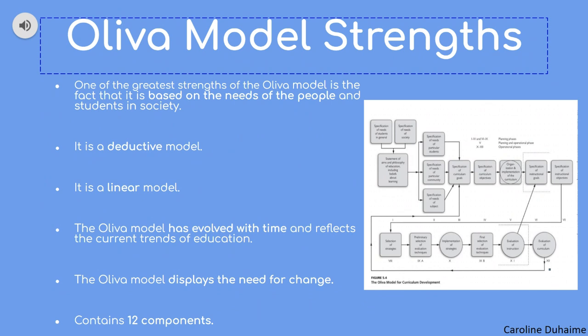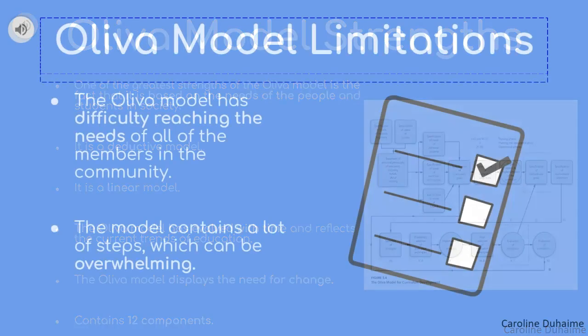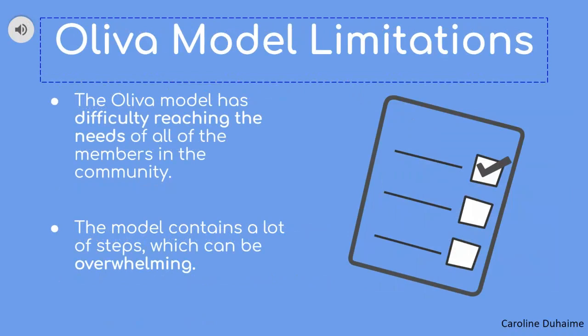The model contains 12 components, which demonstrates its thoroughness. Looking at the diagram, you can also notice the use of squares and circles, which demonstrates the flow of the model and shows great organization. As for the limitations of the Oliva model, while it does a great job of tailoring its construction to the needs of the people, it has difficulty reaching the needs of all members in the community. Additionally, the number of steps within the model can be overwhelming — while they are well organized and thorough, they may be overbearing and confusing to some.